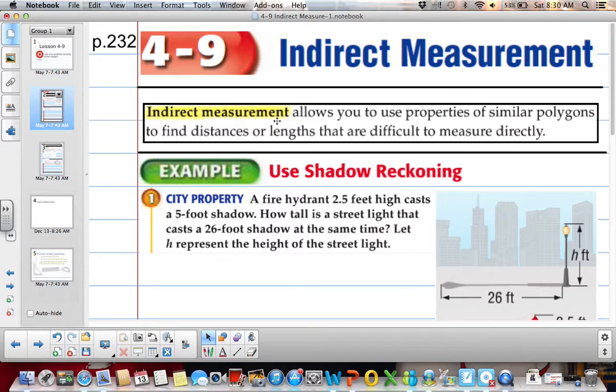Basically we can create similar polygons when we're given a word problem and use their corresponding sides and congruent angles to figure out missing lengths.